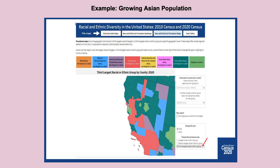When we talk about the growing Asian population in California, this is data from the census. As you can see on this chart, what is red is the growing Asian population. It is really not just isolated to one particular area or along the coast or just in the Inland Empire — it is really crossing the whole state of California. You're seeing urban areas and rural areas.